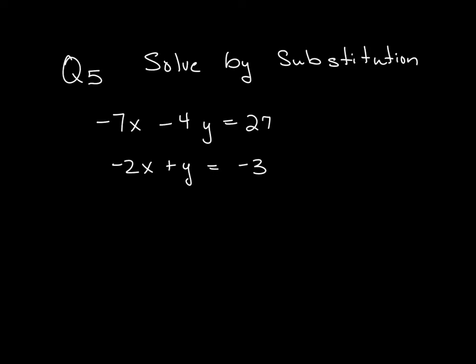In this next page, they ask us to solve by substitution, but you'll notice that both equations are in standard form. This one is -7x - 4y = 27. But this next one has a 1 as a coefficient for this x. So what I want to do is get this y all by itself by adding 2x to both sides, which gives me y = 2x - 3.